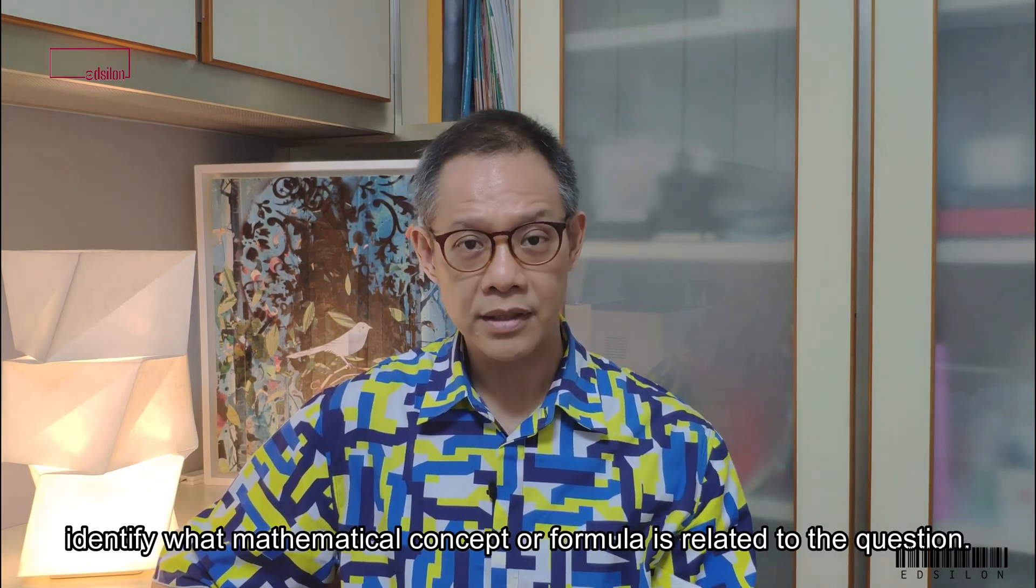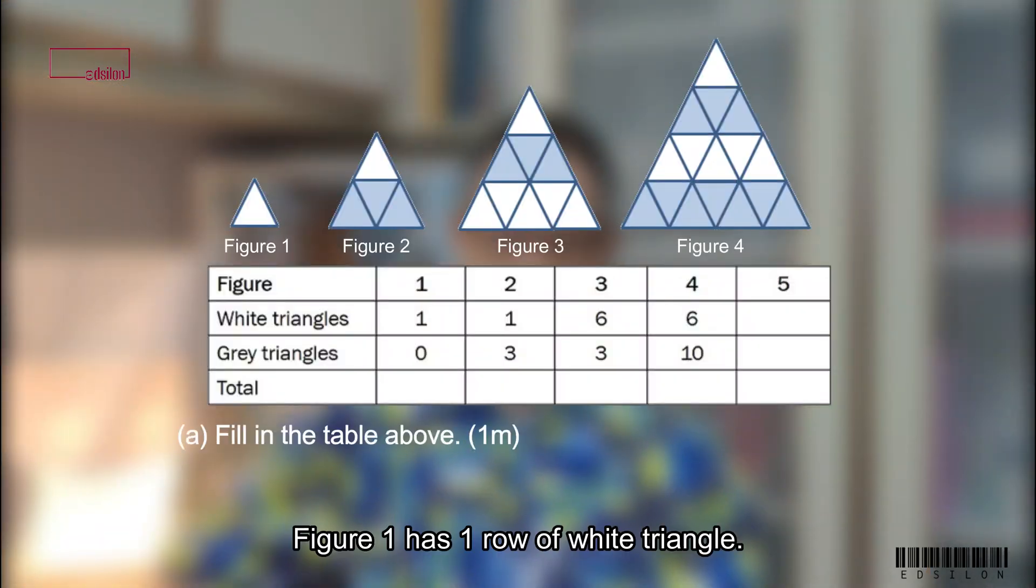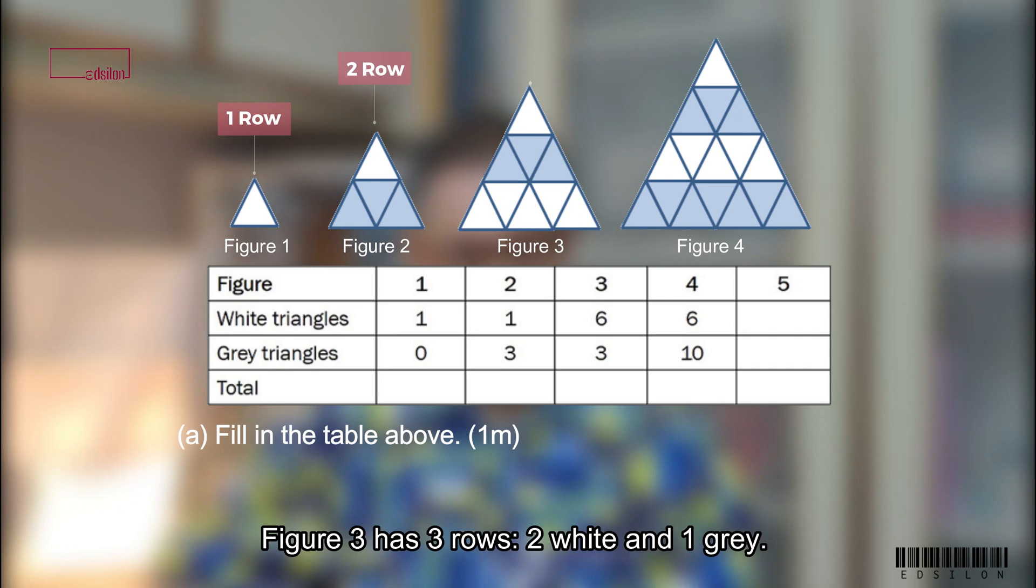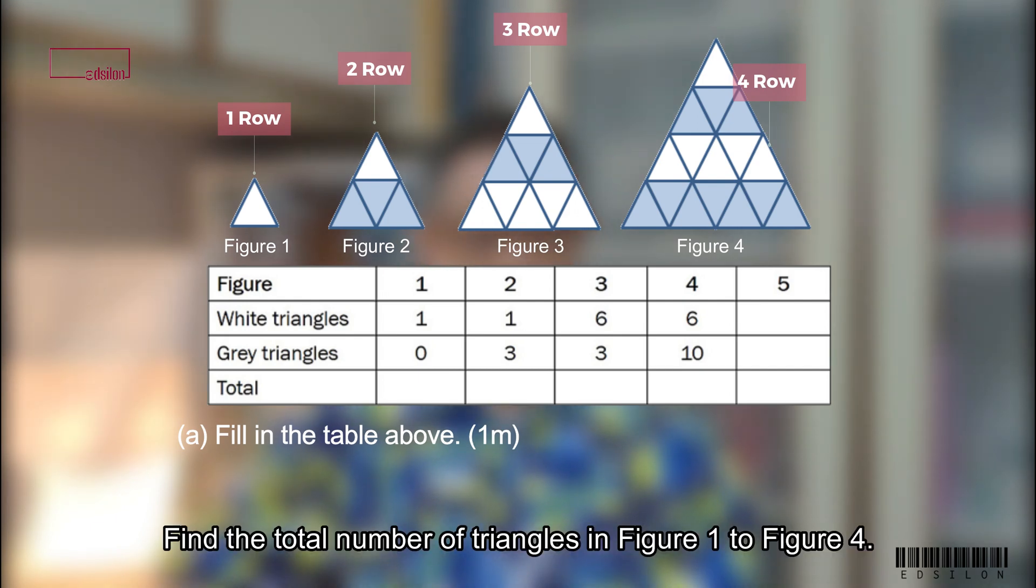Identify what mathematical concept or formula is related to the question. Figure 1 has 1 row of white triangles. Figure 2 has 2 rows, 1 row of white and 1 row of grey. Figure 3 has 3 rows, 2 white and 1 grey. Figure 4 has 4 rows, 2 white and 2 grey. How many rows are there in figure 5? How many white? How many grey triangles are there in figure 5?